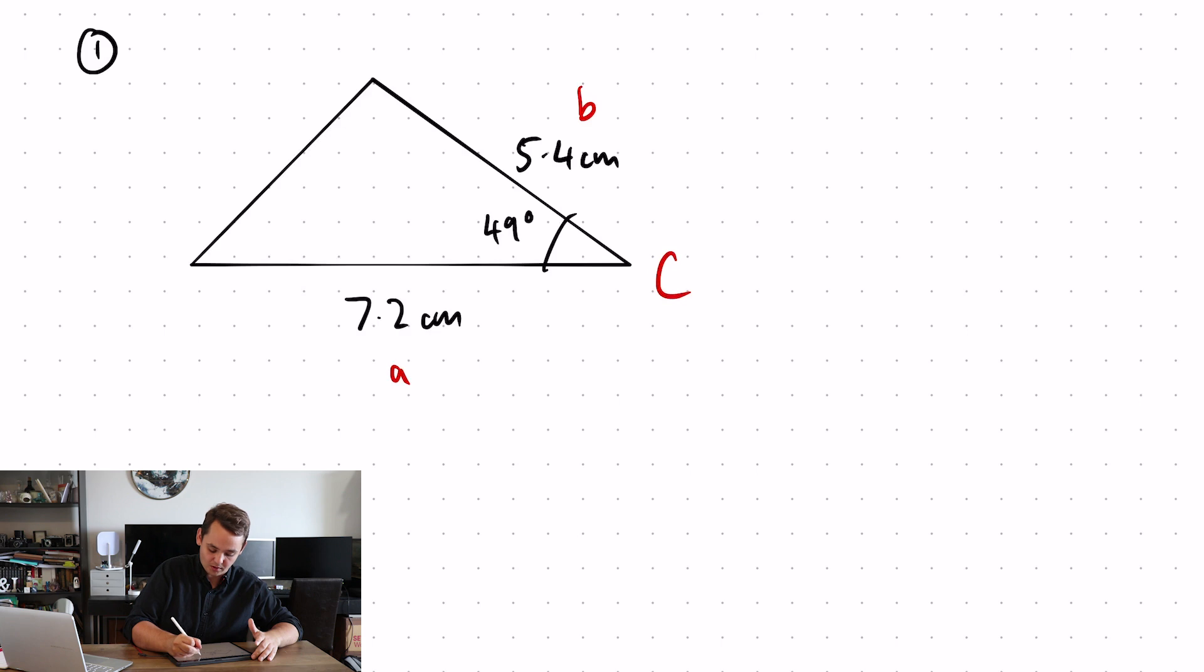Put it into your formula. Area is equal to half 7.2, 5.4, sine 49, giving you an area of 14.7 centimeters squared.